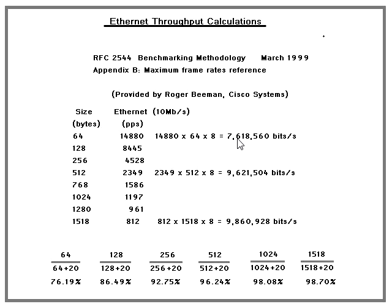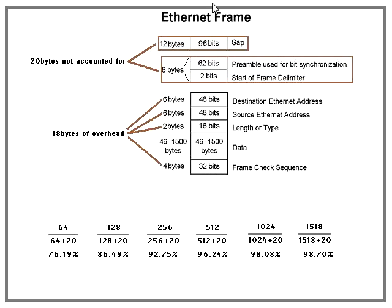You might be asking what happened to the other 2.4 megabits per second. That is due to the fact that when you look at the Ethernet frame, there are 20 bytes that are not accounted for. The first 12 bytes is your inter-frame gap — a silence with no transmission for 96 bits — and then you have your preamble, which is 64 bits, or 8 bytes. Together, that's 20 bytes not accounted for.